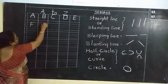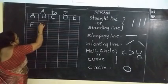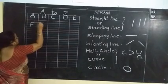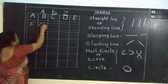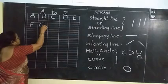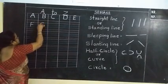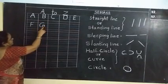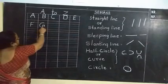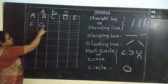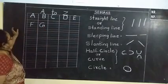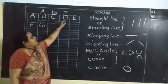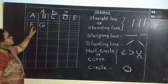Capital G: right half circle, sleeping line, and small straight line. Half circle, sleeping line, small sleeping line, and small straight line — it makes capital G. Capital A, B, C, D, E, F, G.